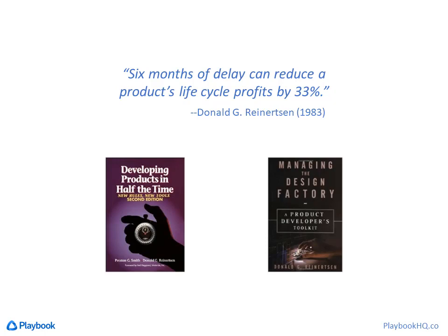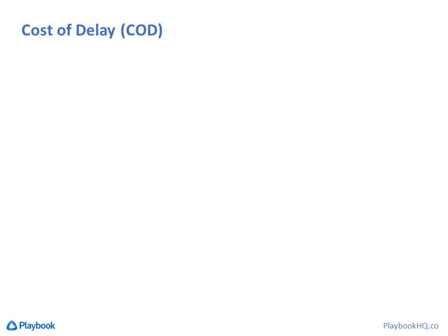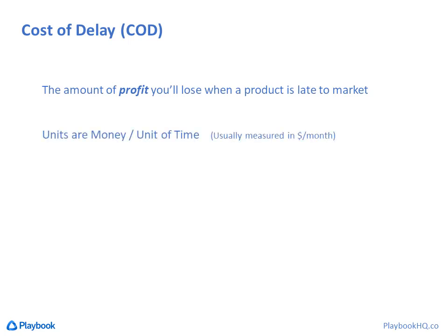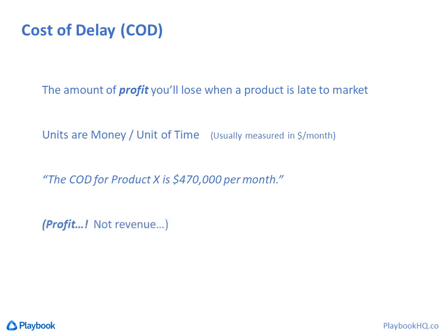So what is cost of delay? Very simply, it's the amount of profit you'll lose if you're late to market with your product. The units are in dollars — or whatever your local currency is — per unit of time. If the unit of time is not stated, it's usually one month. This number is unique for each product a company makes. For example, for product X you could say the cost of delay is $470,000 per month — and remember, this is profit, not revenue.